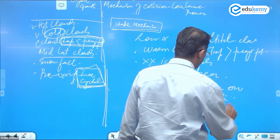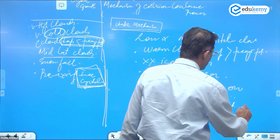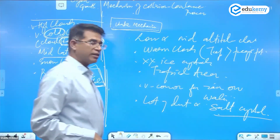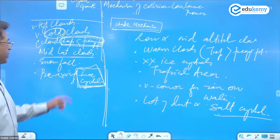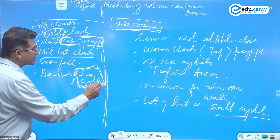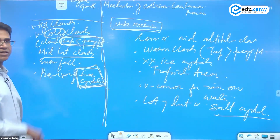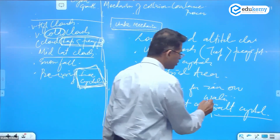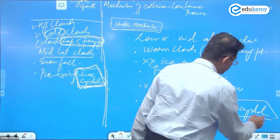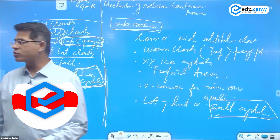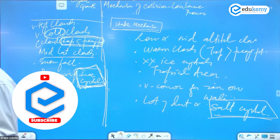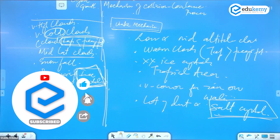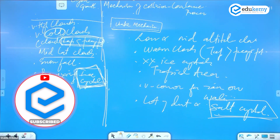Such clouds generally have a lot of dust particles and also a lot of salt crystals. Bergeron's Process happens when the cloud has ice crystals; the Langmuir-Simpson Process happens when the cloud has salt crystals — that's why it is very common over the oceans and seas.